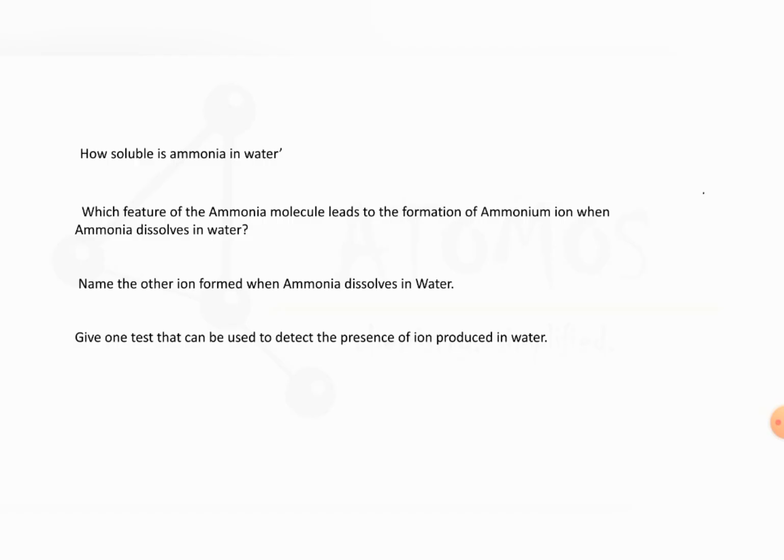Now read the question: How soluble is ammonia in water? It is highly soluble. Next question: Which feature of ammonia molecule leads to the formation of ammonium ion when ammonia dissolves in water? Ammonia has got a pair of electrons. The lone pair that is present on nitrogen is responsible for the formation of ammonium ion.